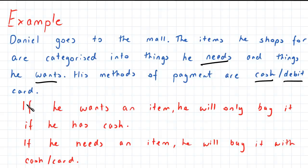And so the conditions that are imposed in this example are that if he wants an item, he will only buy if he has cash. And if he needs an item, he will buy it with cash or if he has a card.